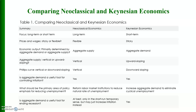Comparing new classical and Keynesian economics: New classical economics is long-term oriented; Keynesian is short-term. Prices and wages are flexible in new classical economics but sticky or downward rigid in Keynesian economics. Economic output is determined by aggregate supply in new classical economics but by aggregate demand in Keynesian economics. Aggregate supply is vertical in new classical economics and upward sloping in Keynesian economics. The Phillips curve is vertical in new classical economics and downward sloping in Keynesian economics. Aggregate demand is a useful tool for controlling inflation in both perspectives.